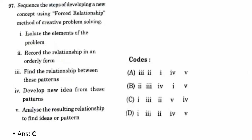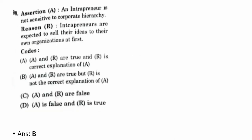Ninety-seventh question: sequence the steps of developing a new concept using the forced relation method of creative problem solving. The correct option is C — one, three, two, five, four: isolate the elements of the problem; find the relation between these patterns; record the relation in an orderly form; analyze the resulting relation to find ideas or patterns; develop a new idea from this pattern.